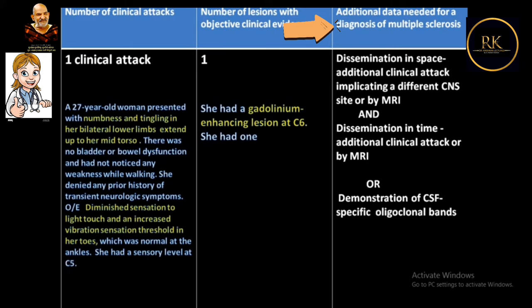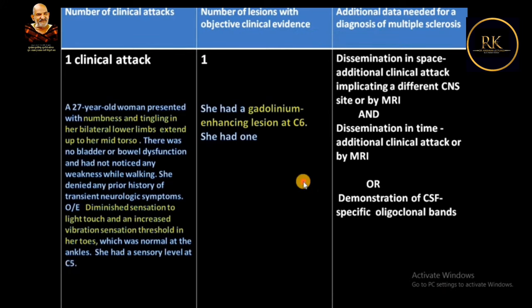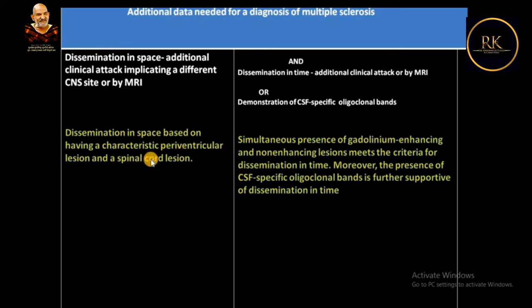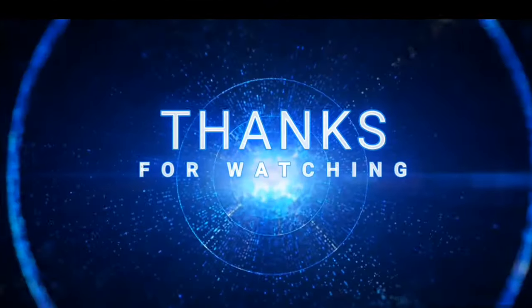This patient has periventricular and spinal cord lesions, so the criterion for dissemination in space is fulfilled. The simultaneous presence of gadolinium-enhancing and non-enhancing lesions meets the criterion for dissemination in time, and the CSF-specific oligoclonal bands further support dissemination in time. Therefore, this was a case of clinically isolated syndrome fulfilling McDonald criteria for MS diagnosis. Thank you.